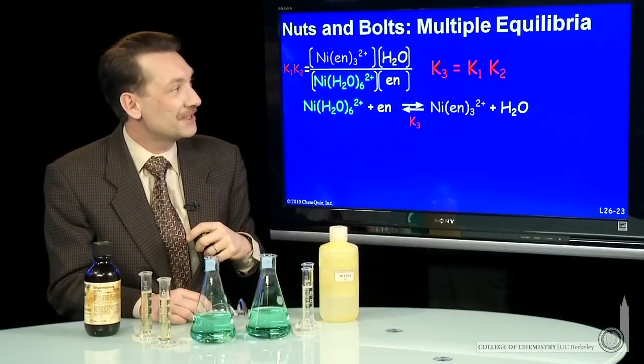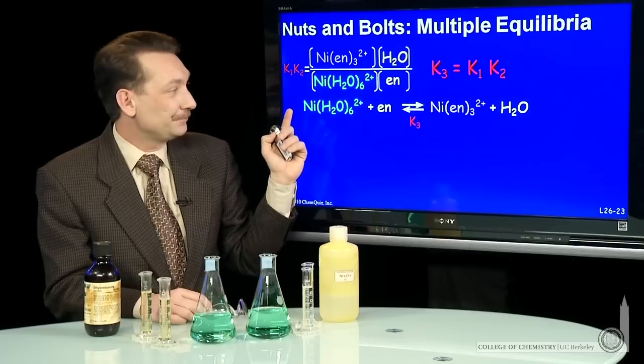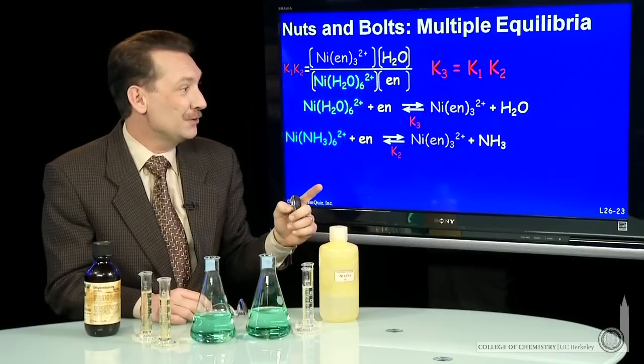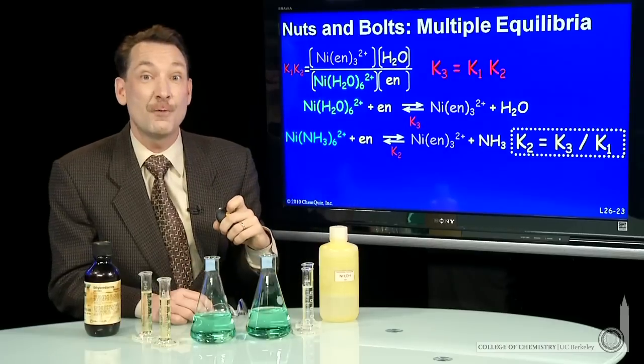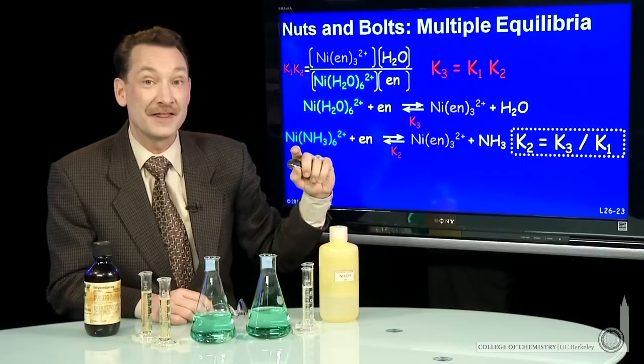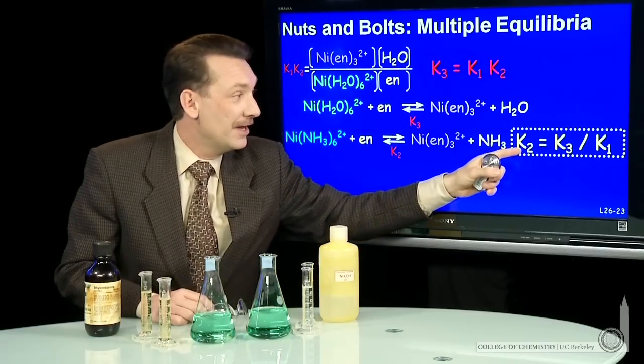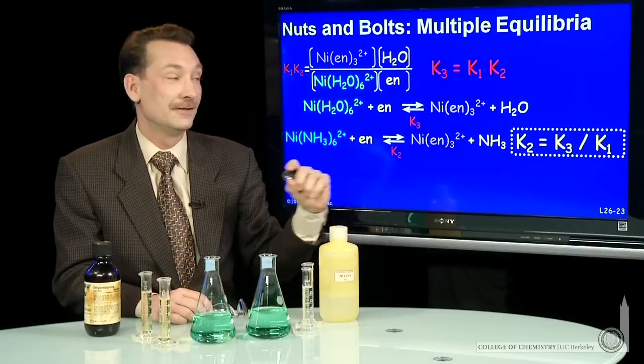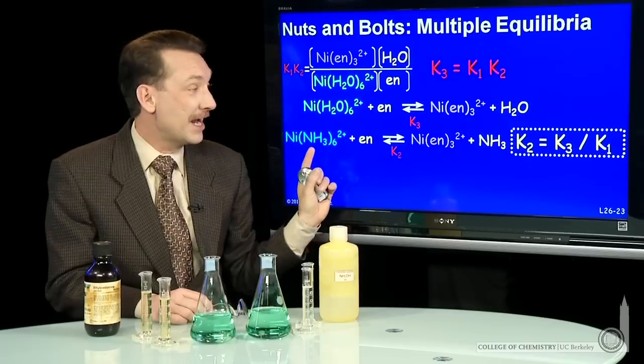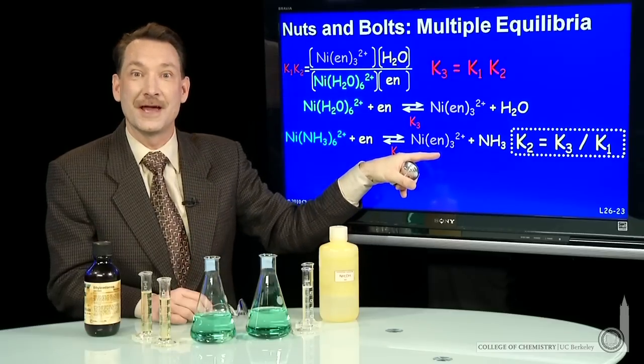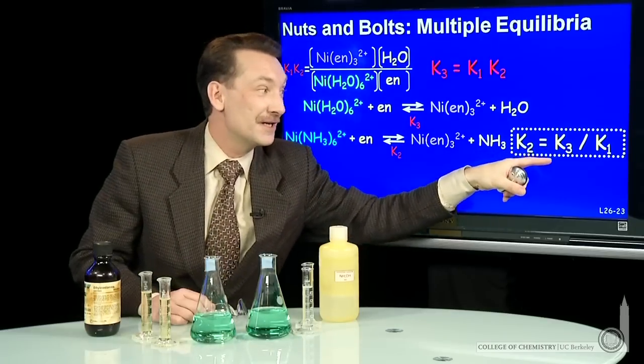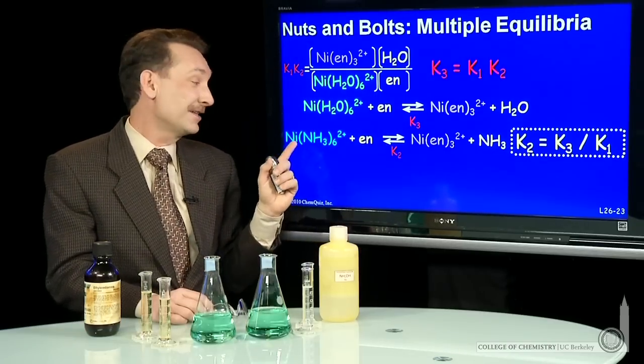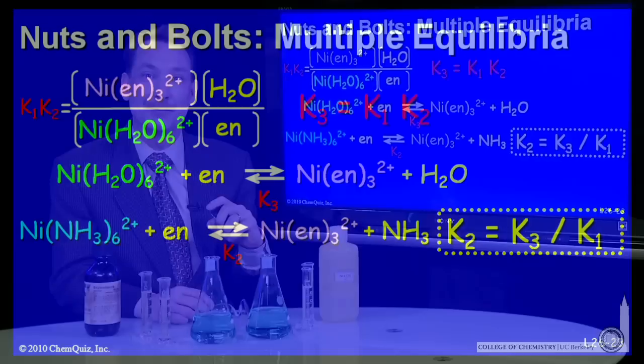Now we're in a position to determine K2. We know it's K3 over K1. I can do the math here. If K3 is larger than K1, then K2 will be bigger than 1 and I'll go toward ethylenediamine. If K3 is less than K1, then K2 will be less than 1 and I'll stay on the reactant side at the ammonia complex.